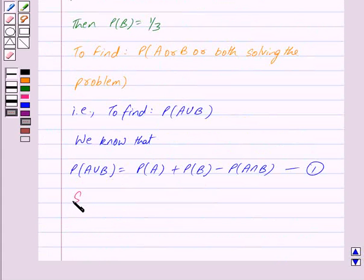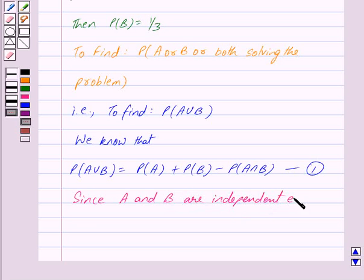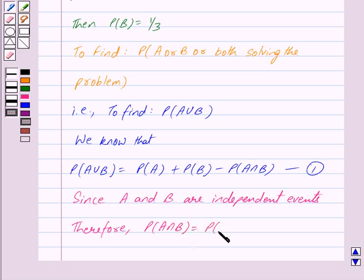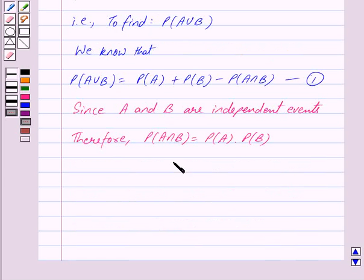So since A and B are independent events, therefore Probability of A intersection B is equal to Probability of A into Probability of B. This is equal to 1/2 into 1/3, and we get Probability of A intersection B is equal to 1/6.